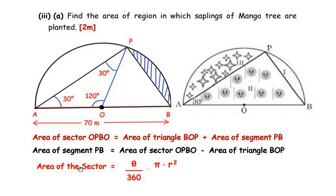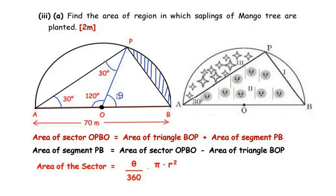Finding the area of sector OPBO first: the formula is (theta/360) × pi × r², where theta is the central angle. The sector OPBO has central angle theta. Since AOB is a straight line (diameter) and angle AOP is 120 degrees, theta equals 180 minus 120, which is 60 degrees. The radius is 35 meters.